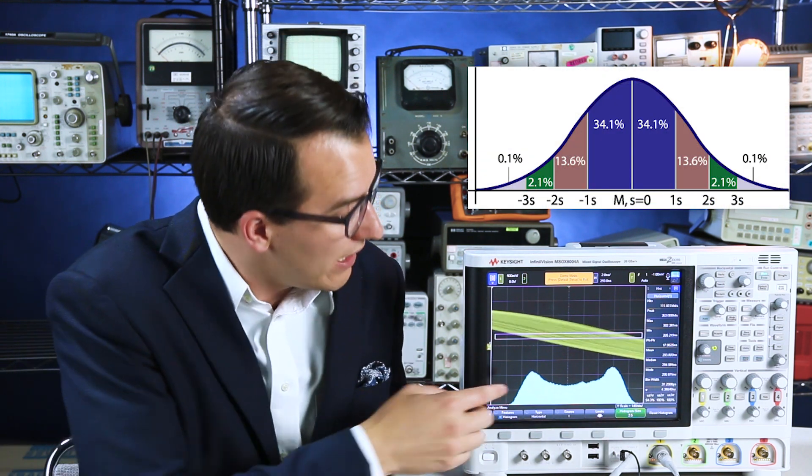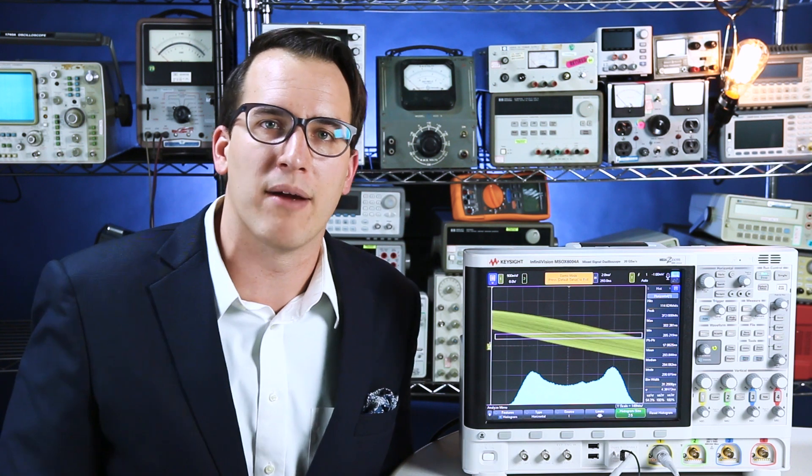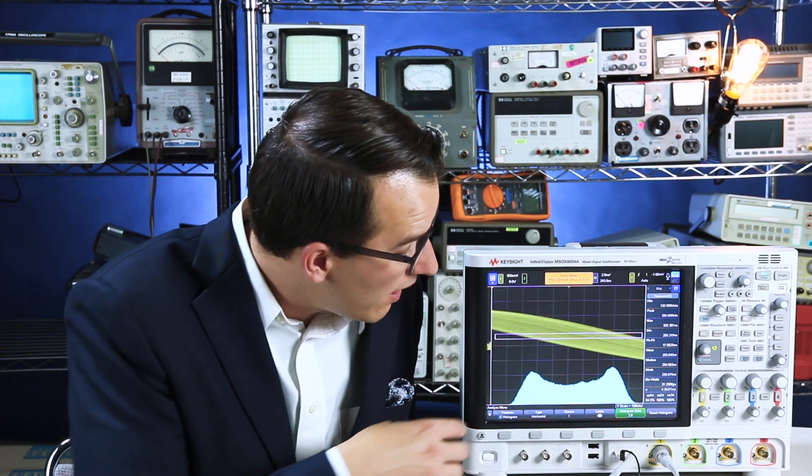But because this is sinusoidal, we actually see two points in my histogram. There's definitely some random tail around that, so there's still random jitter involved. But because this is what we call a bimodal histogram, we know that there's some deterministic jitter inherent in my signal.